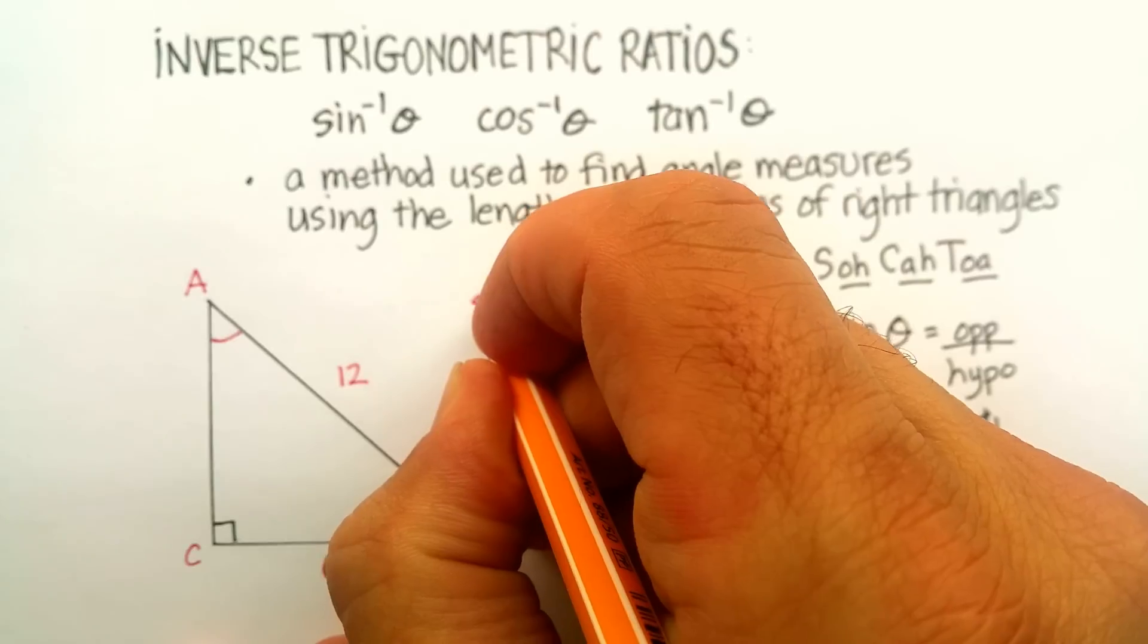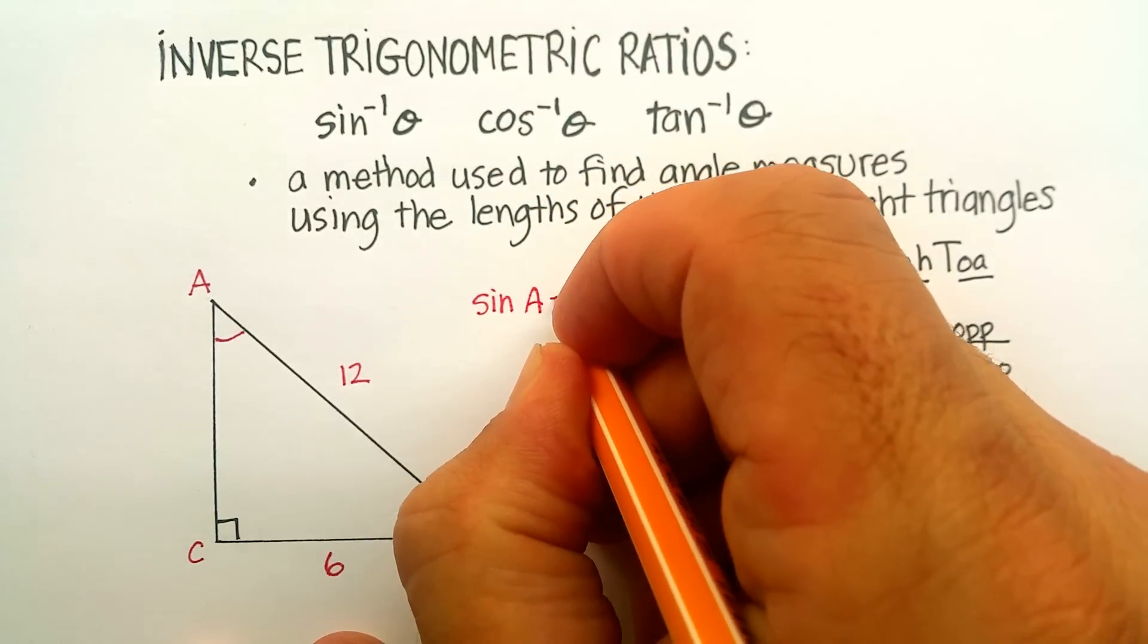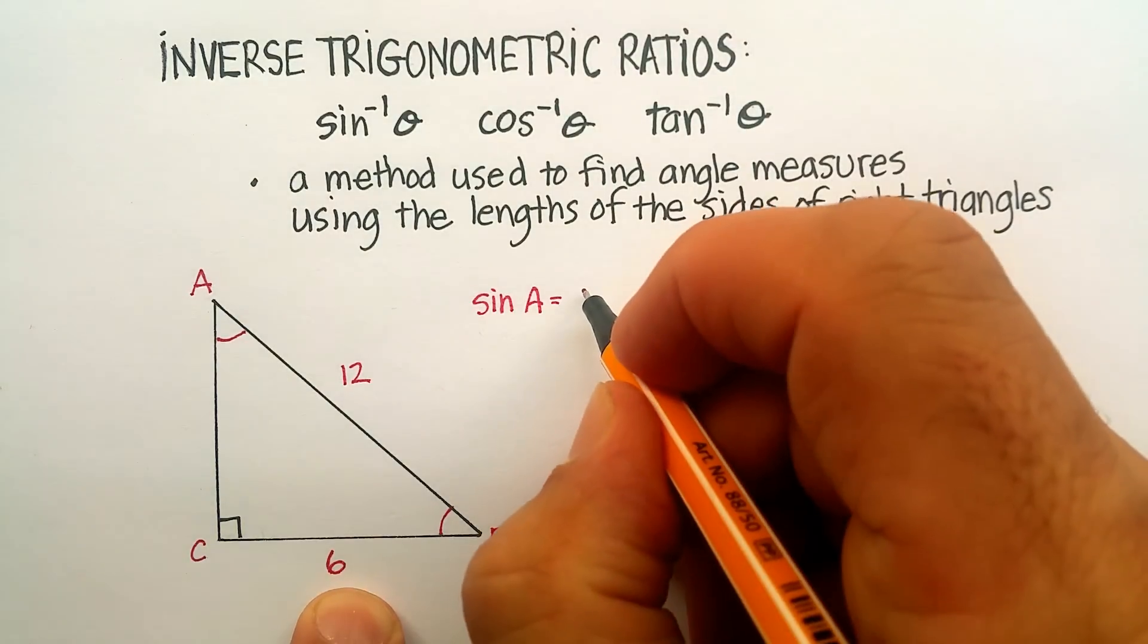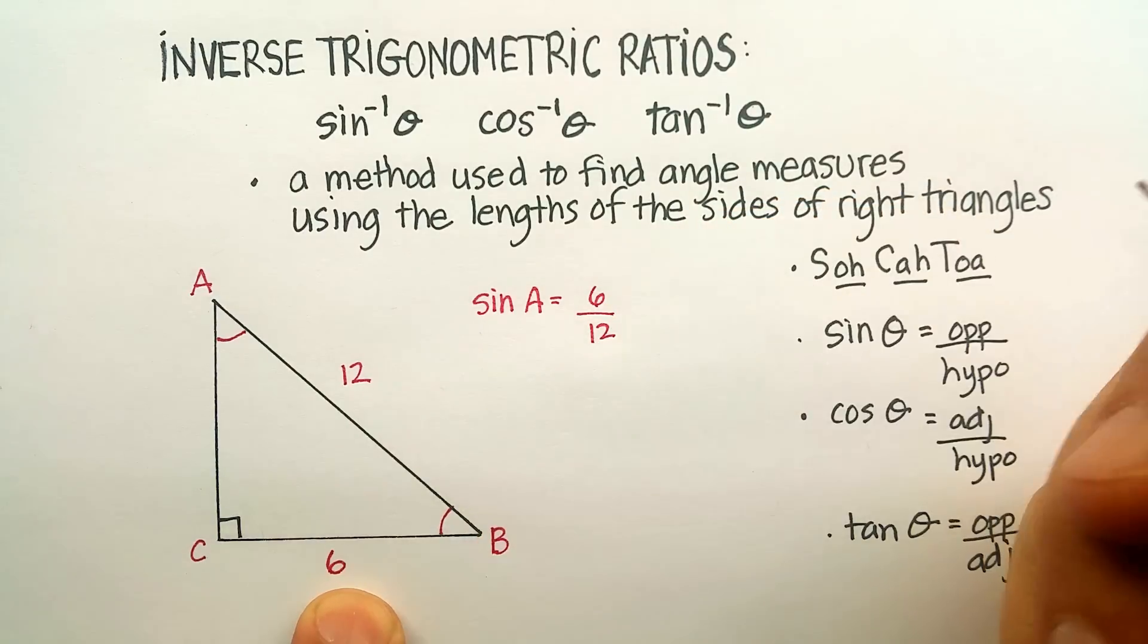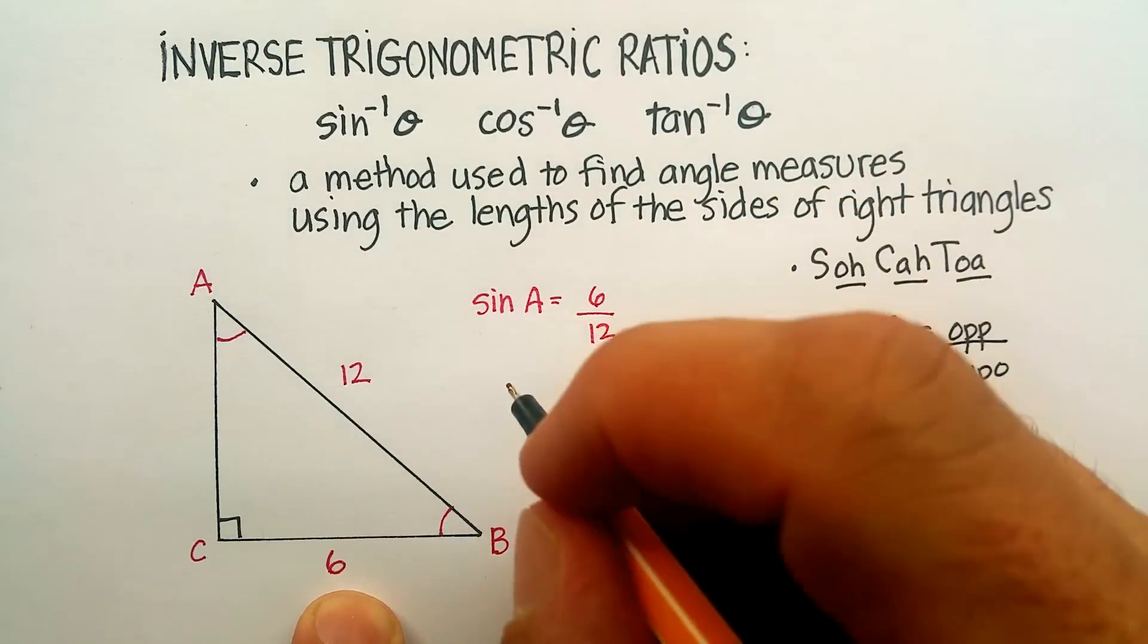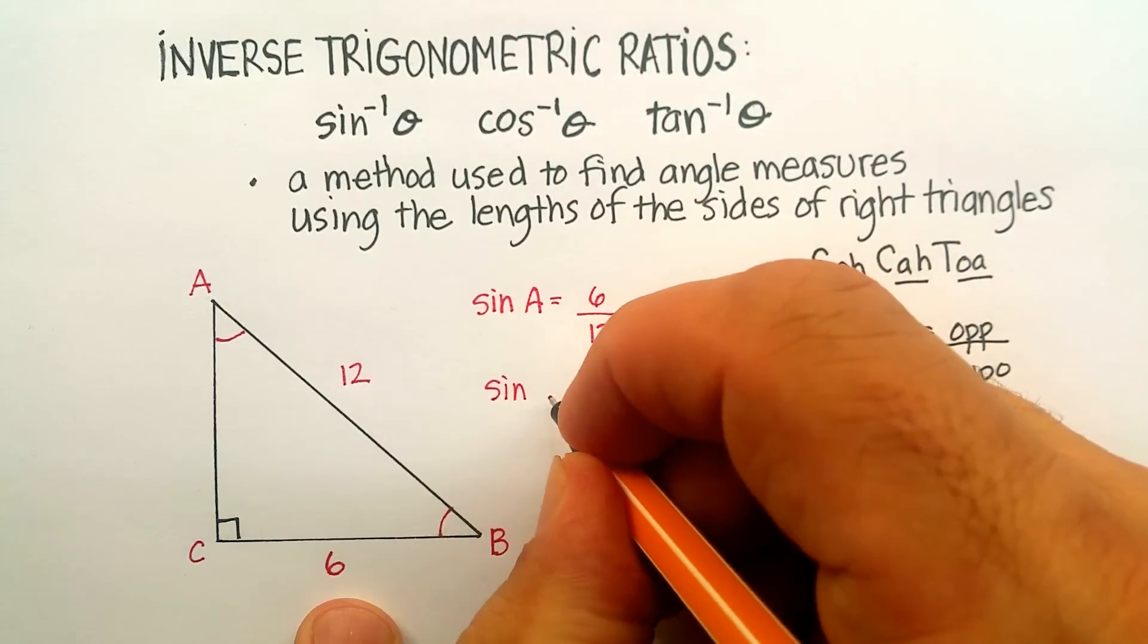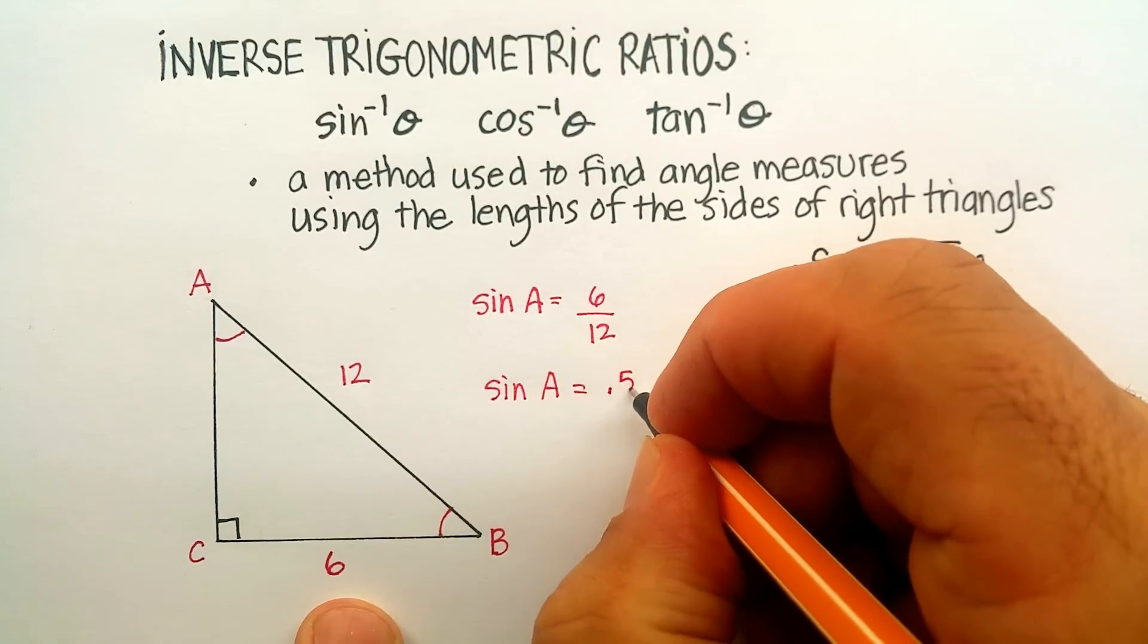I know that the sine of angle A would be equal to the opposite over the hypotenuse. So that would be equal to 6 over 12. And basically what that comes down to is I get that the sine of angle A is equal to 0.5.